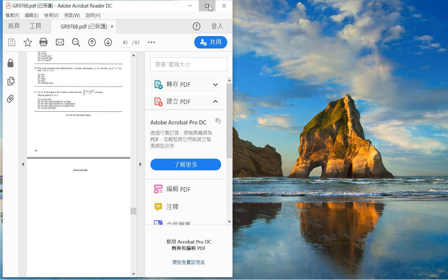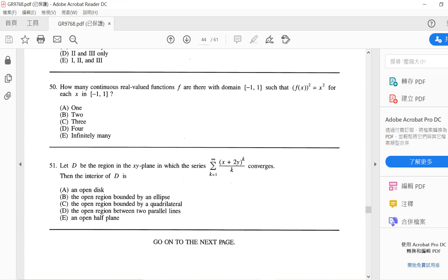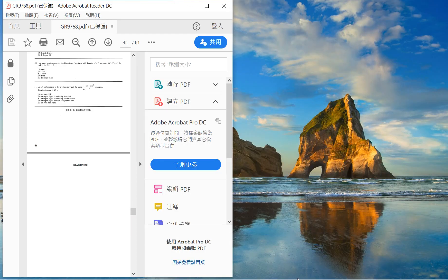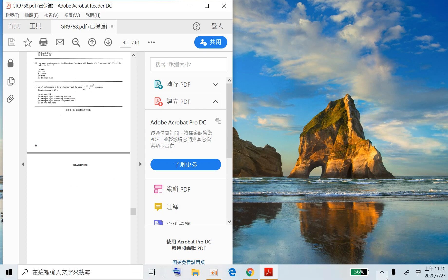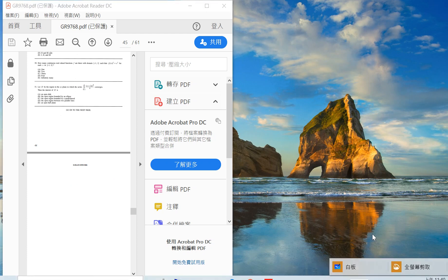Welcome guys, so today we keep solving our GRE Math section 9768, number 51. Question 51 is about this region in the XY plane and the series converge, and asks about the interior. So usually to test the series convergence or not, what we will use is the ratio test.